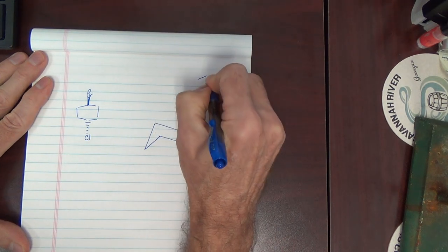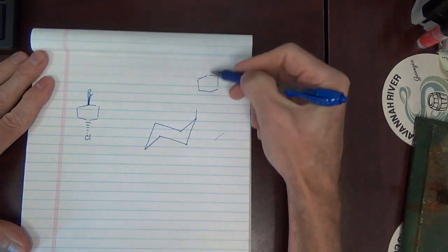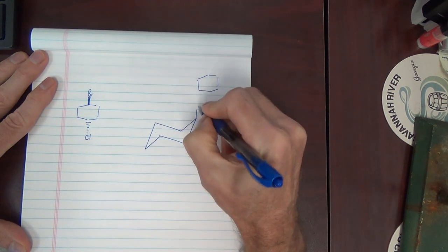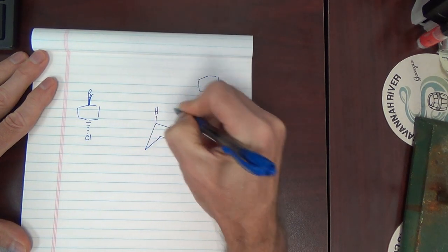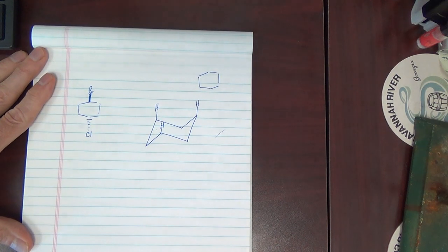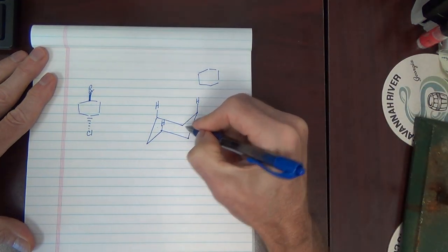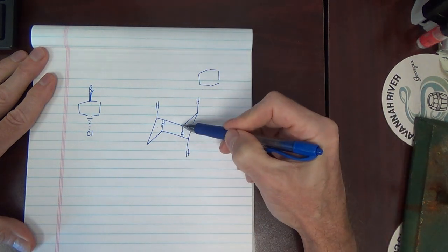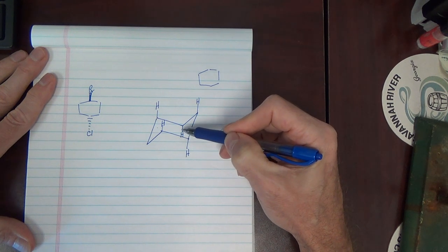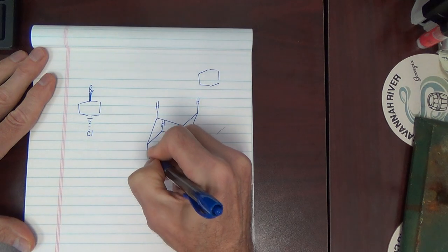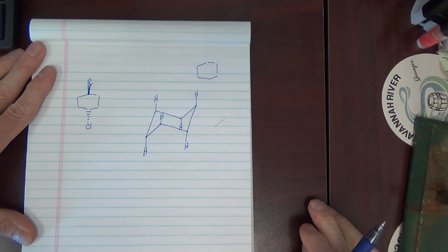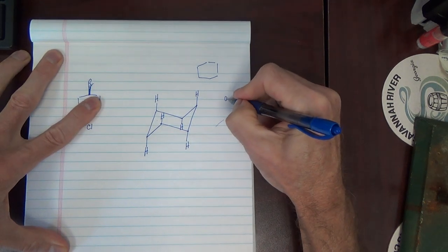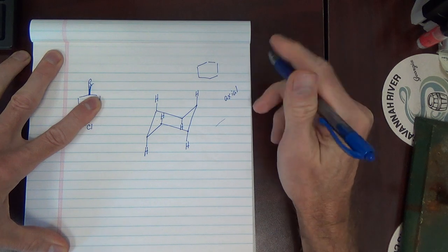Let's draw a chair with all H's. Straight up carbons get straight up bonds — H here and H here. And in the down carbons, here and here, they get straight down bonds — H, H. Sometimes that's drawn short, sometimes extended. Those six H's are all called axial, or axial H's.